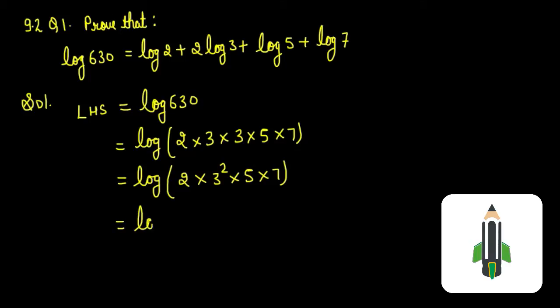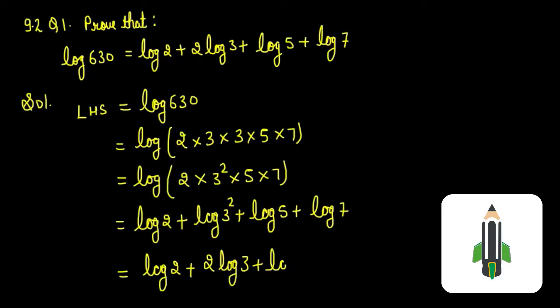Here using the formula, we can write in this form: log 2 plus log 3 raised to the power 2 plus log 5 plus log 7, which is equal to log 2 plus 2 log 3 plus log 5 plus log 7.